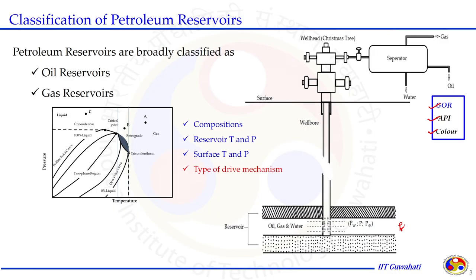The phase behavior depends on the composition of the fluid, reservoir temperature and pressure conditions, conditions at the surface when this fluid is brought to the surface, and types of drive mechanisms involved in reservoir fluid production. We will discuss the drive mechanism in a separate chapter. In today's discussion, we will see how the reservoir can be classified thermodynamically based on composition, temperature, and pressure at both reservoir and surface conditions.